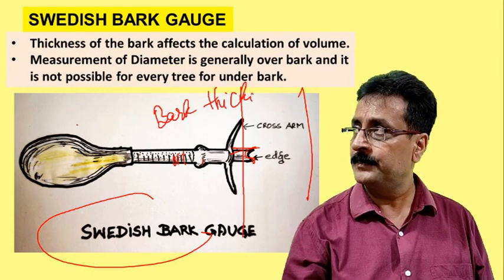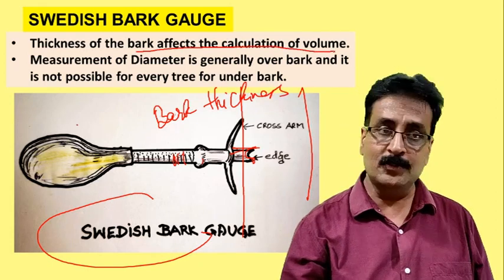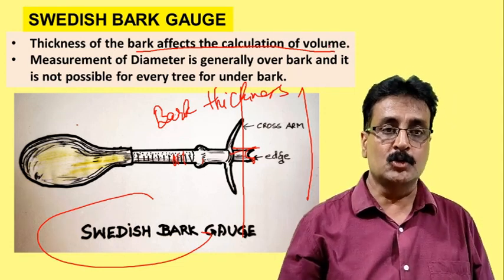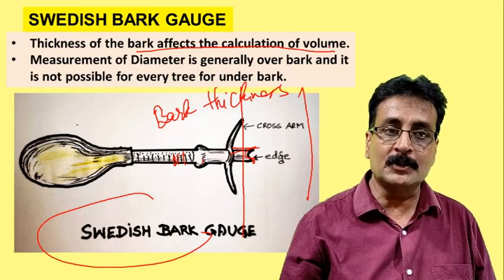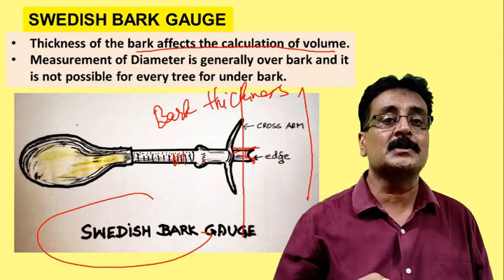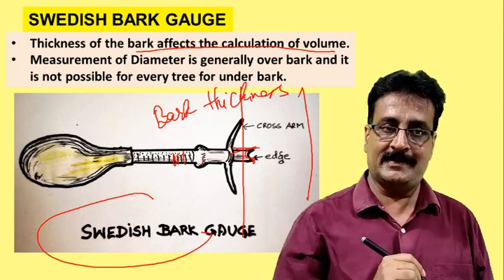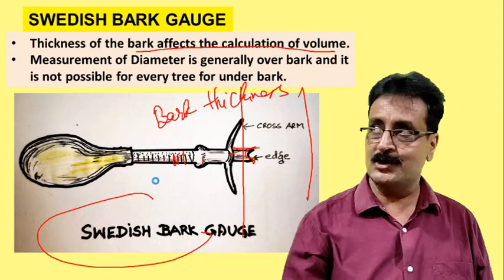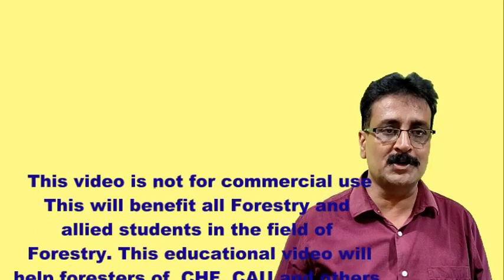The last instrument is the Swedish bark gauge. Since bark does not contribute to timber volume, we need to measure bark thickness without destructive sampling. You insert the edge of the gauge into the bark of the tree and read the bark thickness directly. Species like eucalyptus have thin bark while Pinus roxburghii has thick bark. Thicker bark means less timber volume and higher wastage, which affects valuation — so bark thickness matters to sawmillers and merchants.